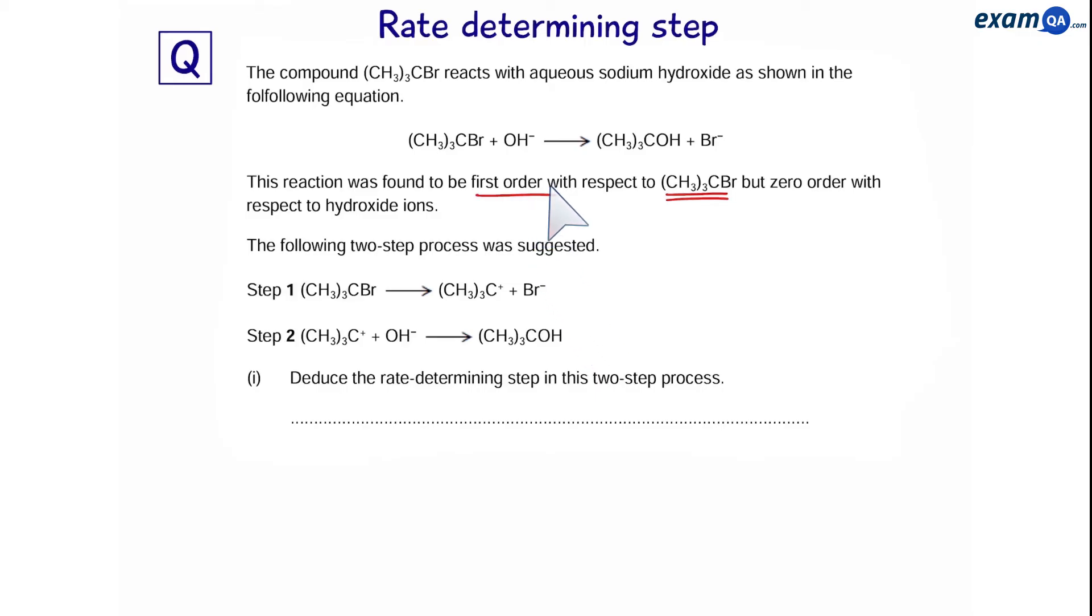It's first order with this compound, which means this will definitely appear in the rate determining step. And zero order with hydroxide, so hydroxide will not appear. Step 1 is the only one that suits the requirements. That means the answer must be step 1.